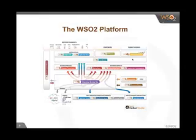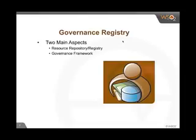Let's go through what Governance Registry is and its two main aspects. In Governance Registry, the major aspects are a repository and registry as well as the Governance Framework. All carbon services released on the WSO2 Platform have an embedded registry and repository — a kind of embedded G-REG. It also acts as a governance framework in addition to the repository aspect.